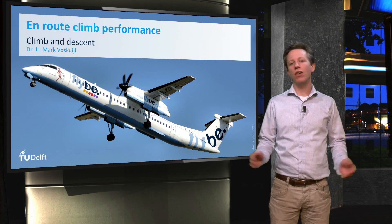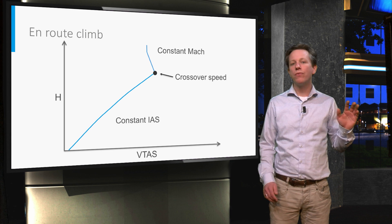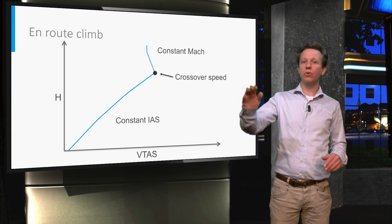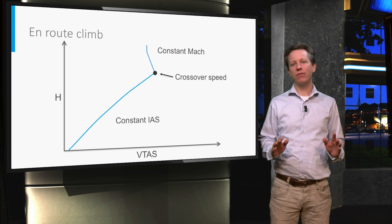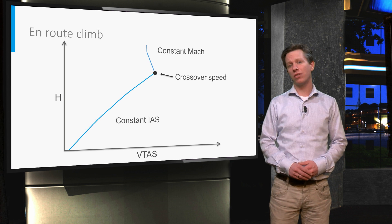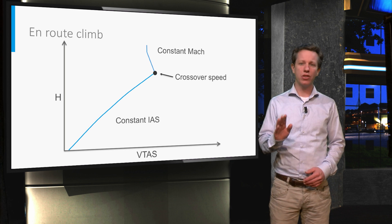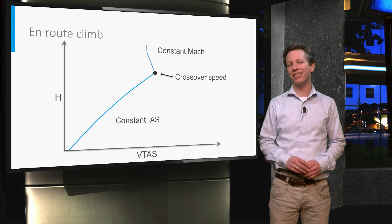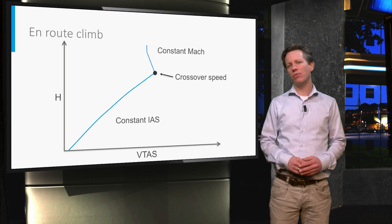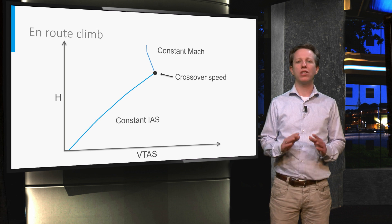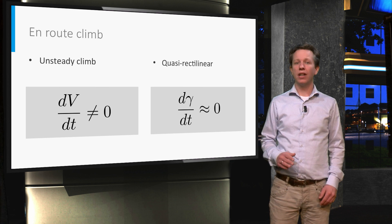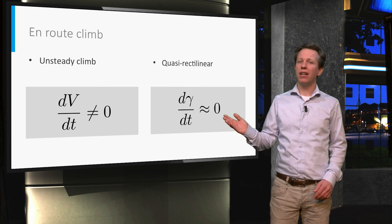Hello! In the en route climb phase, from about 1500 to 3000 feet altitude up to the cruise altitude, the aircraft is flying either at a constant indicated airspeed or at a constant Mach number. As a result of the changing air density and air temperature with altitude, this results in an unsteady climbing flight which is quasi-rectilinear — in other words, the flight path angle is fairly constant.